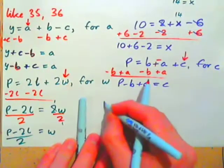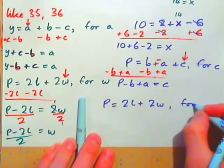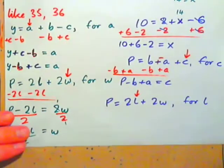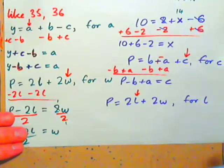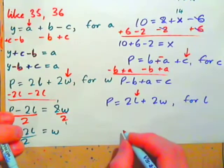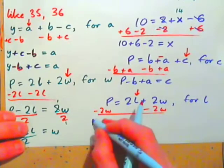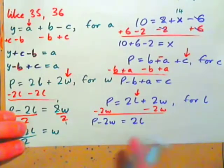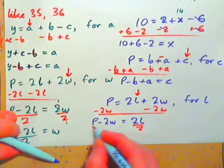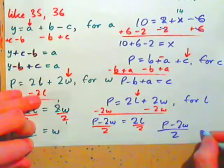For practice: P equals 2L plus 2W — solve for L. L has been multiplied by 2, then 2W has been added. Subtract 2W from both sides: P minus 2W equals 2L. Then divide both sides by 2, and we have P minus 2W all over 2 equals L.